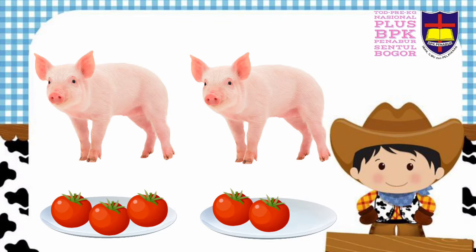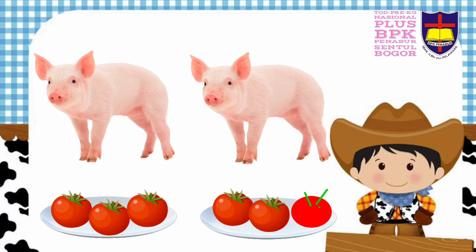Let's see another example. What animal do you see? Yes, there are two pigs and they have tomatoes on their plate. Do they have the same amount of tomatoes? Can you draw more tomatoes to make the shares fair? How many tomatoes in each plate? After that, you can count how many tomatoes altogether.